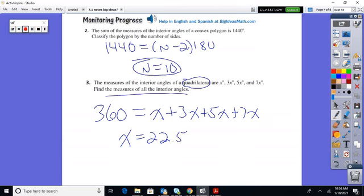And they want to know all the interior angles. Then you just have to plug it back in. So that's one of your angles. So then 3 times that would be 67.5. 5 times that is 112.5.